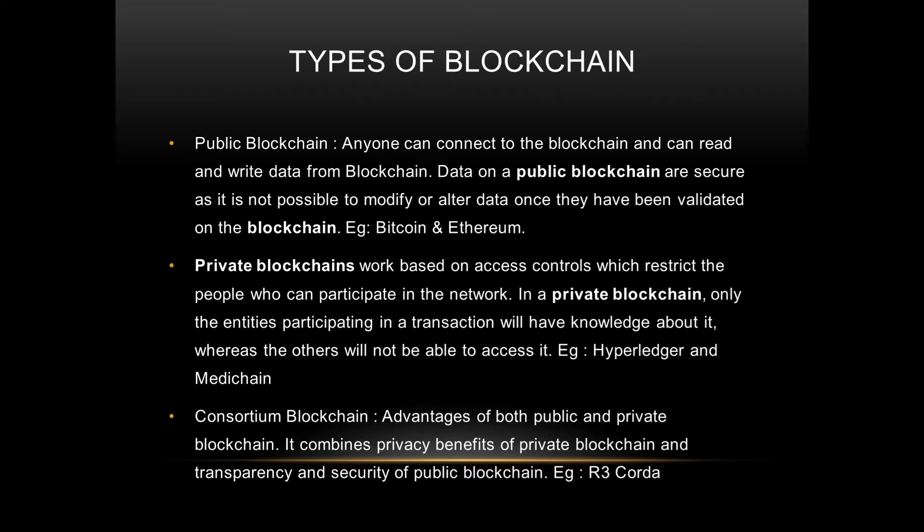Data on a public blockchain is secure and it is not possible to tamper it, because any change needs consensus — it must be passed to everybody and validated. Any faulty node passing wrong data will be rejected. In a public blockchain, no identity is revealed; all accounts are anonymous.